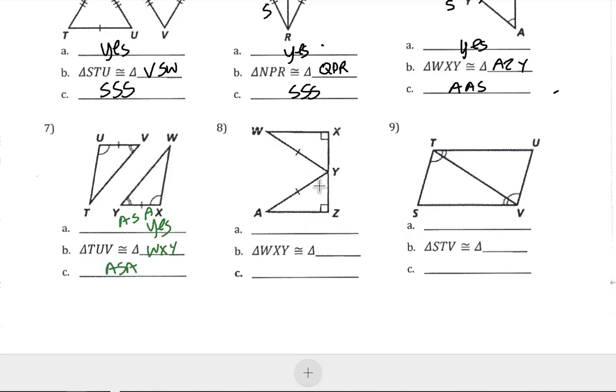For number 8, we have right triangles. With right triangles, we might be able to use hypotenuse-leg. But there's no information about the legs given, and we don't know for sure about the angle at A and the angle at W, or the angles at Y. So we can't make a determination on that one.